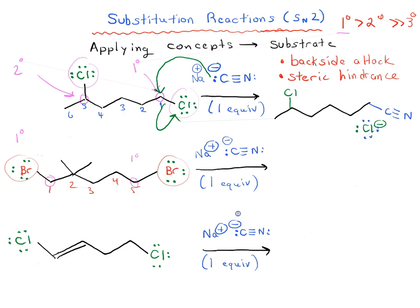But one has to go through and ask a second question when you note you're looking at two different primary positions. Is there one primary position which might be a little bit more sterically hindered than the other? In that case, it can be helpful to look at the carbon next door.